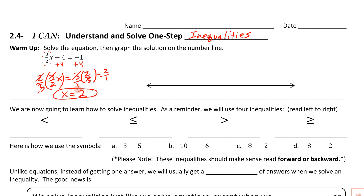If we were to graph this answer, it's not a very interesting graph. We always put 0 on the number line, then put 2 right there and place a filled-in dot at 2. That's how we'd graph the solution to an equation — it's just one single dot.